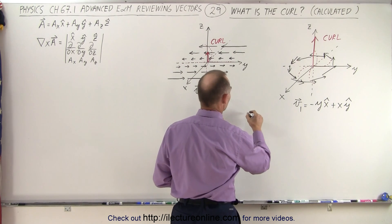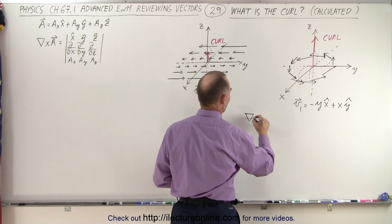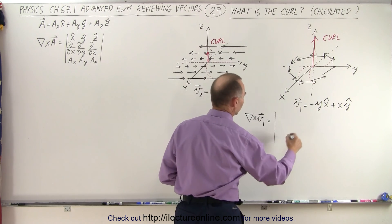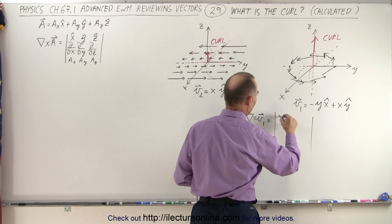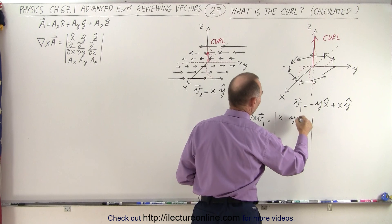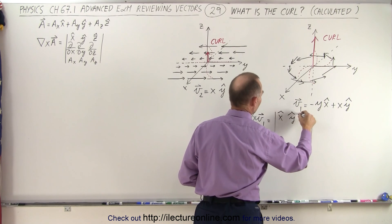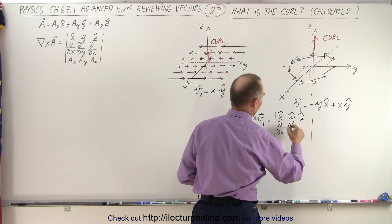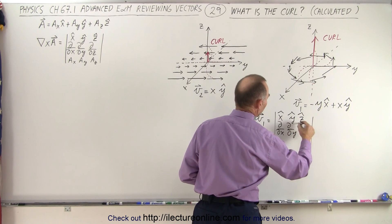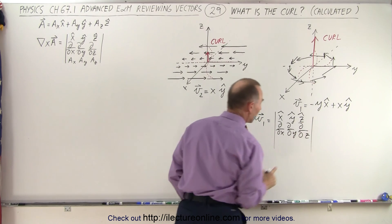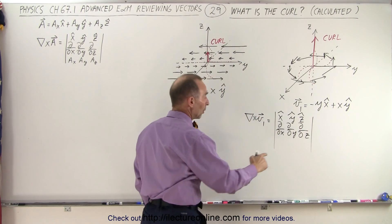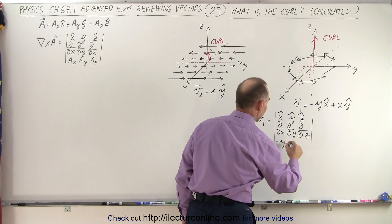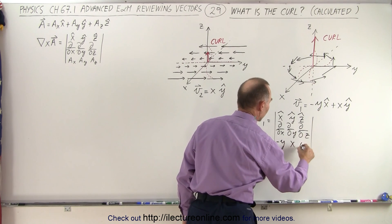First, we're going to take the del operator and multiply it times vector V1. So this is equal to the determinant with x, y, and z unit vectors; the partial derivative with respect to x, y, and z; and then the x, y, and z components of the vector: minus y, x, and 0.